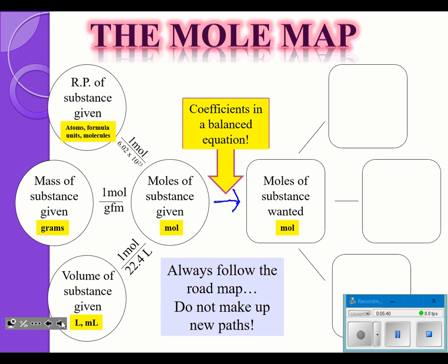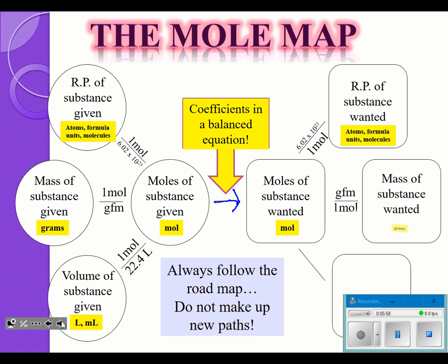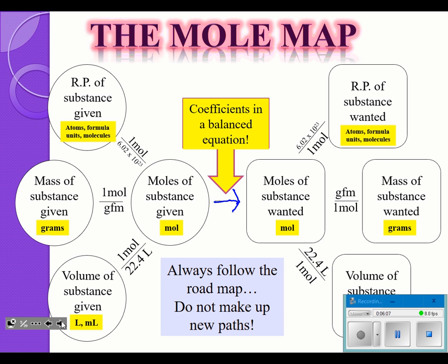So if you're given something other than a mole, you're going to have to convert to a mole first — and that's back in Unit 4. Then we create a mole-to-mole ratio and we'll now be in moles of something else. If we want to find representative particles, we multiply by 6.02 × 10²³. If we want to find mass, we multiply by the GFM of the new wanted material. If we want to find volume, we multiply by 22.4 liters. So it's really about converting to moles first, doing the mole-to-mole ratio, and then converting to whatever you want.